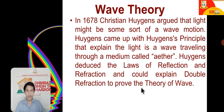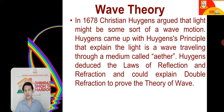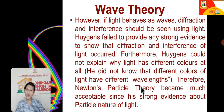In 1678, during Newton's time, Christiaan Huygens argued that light might be some sort of wave motion, not a particle. Huygens came up with Huygens' principle, explaining that light is a wave traveling through a medium called ether. Huygens used the laws of reflection and refraction and could explain double refraction to support the wave theory. However, his proposed wave lacked any concrete explanation or evidence.